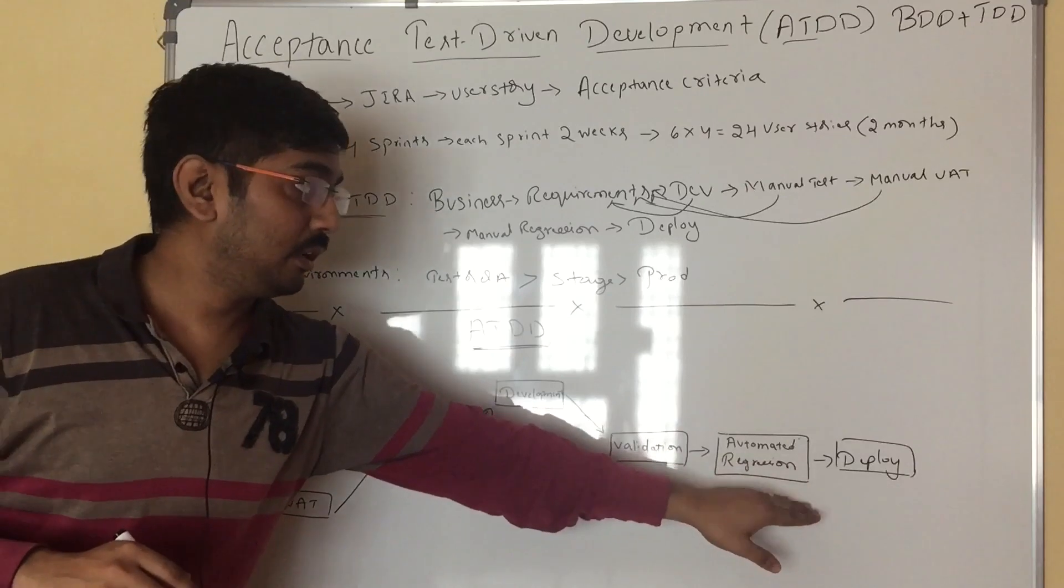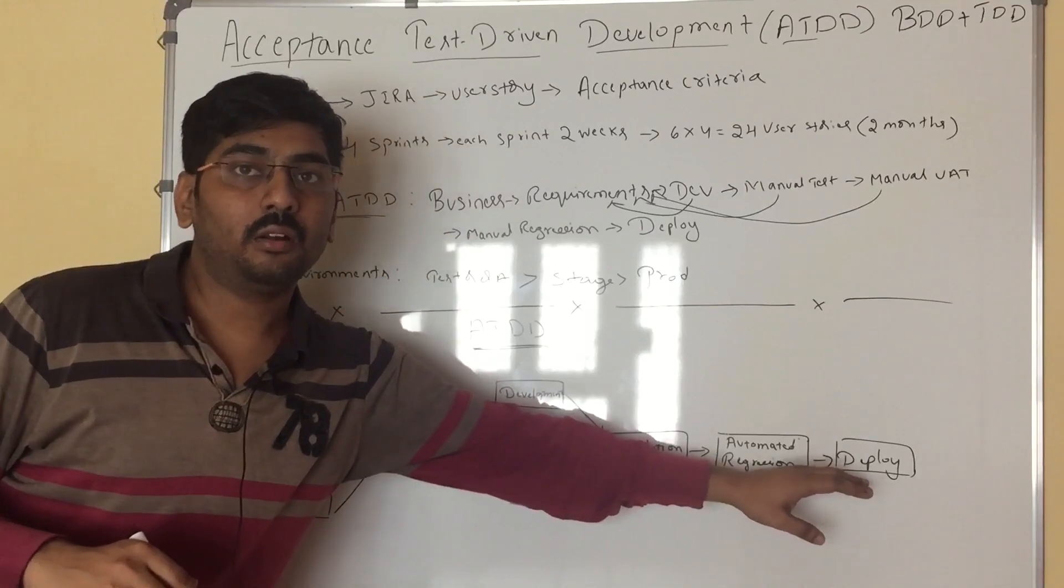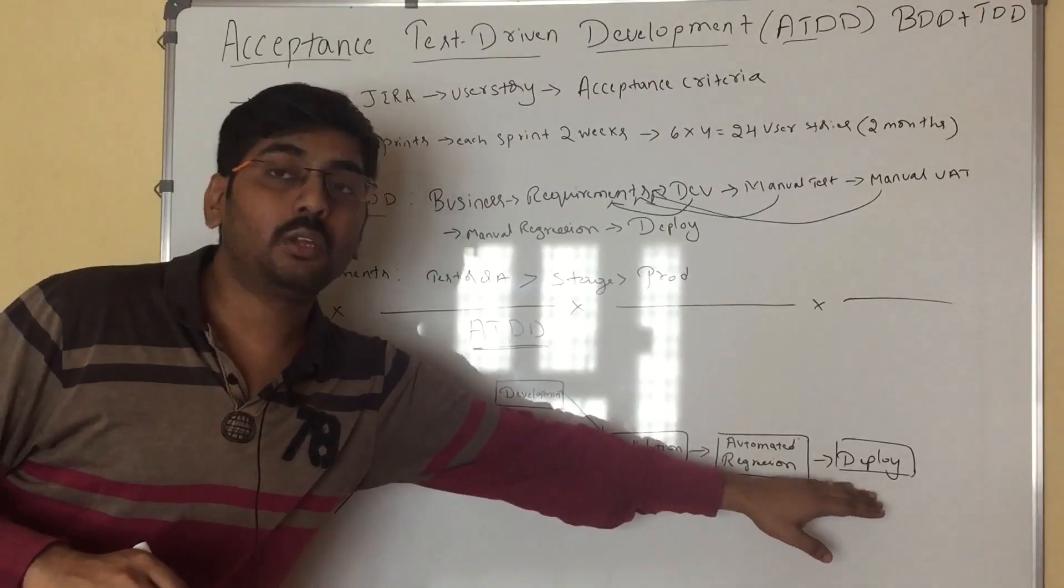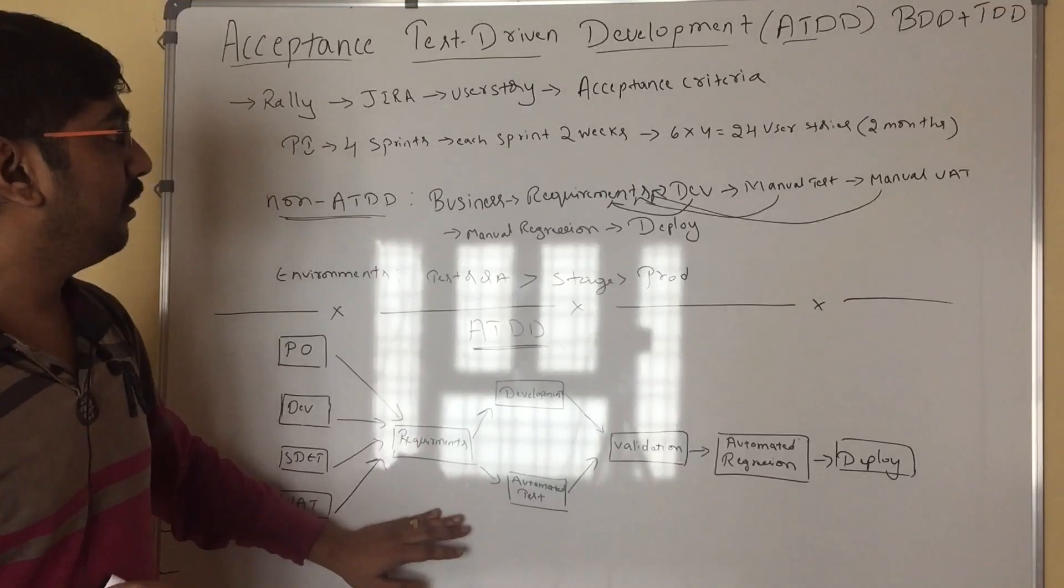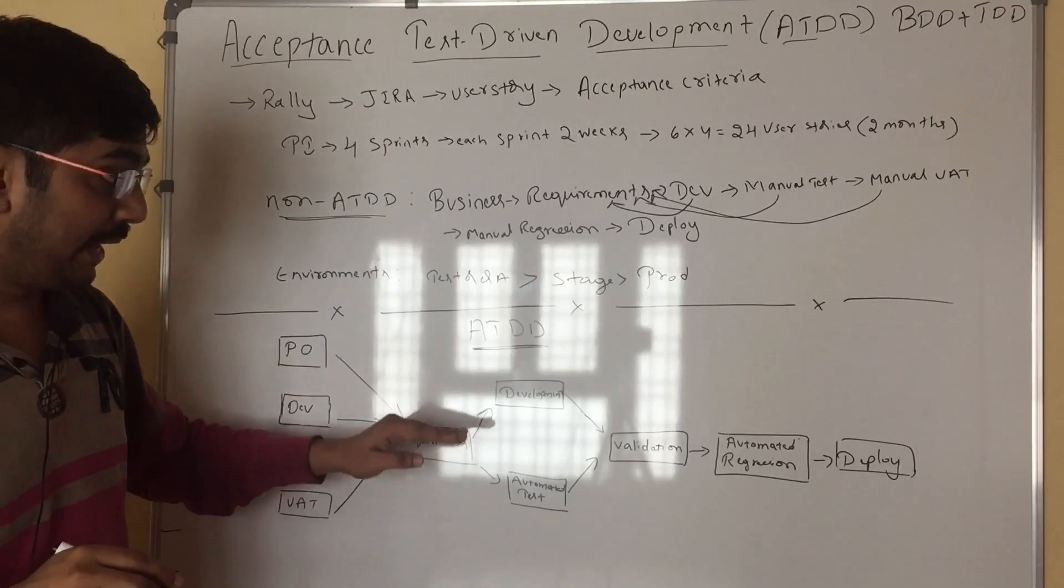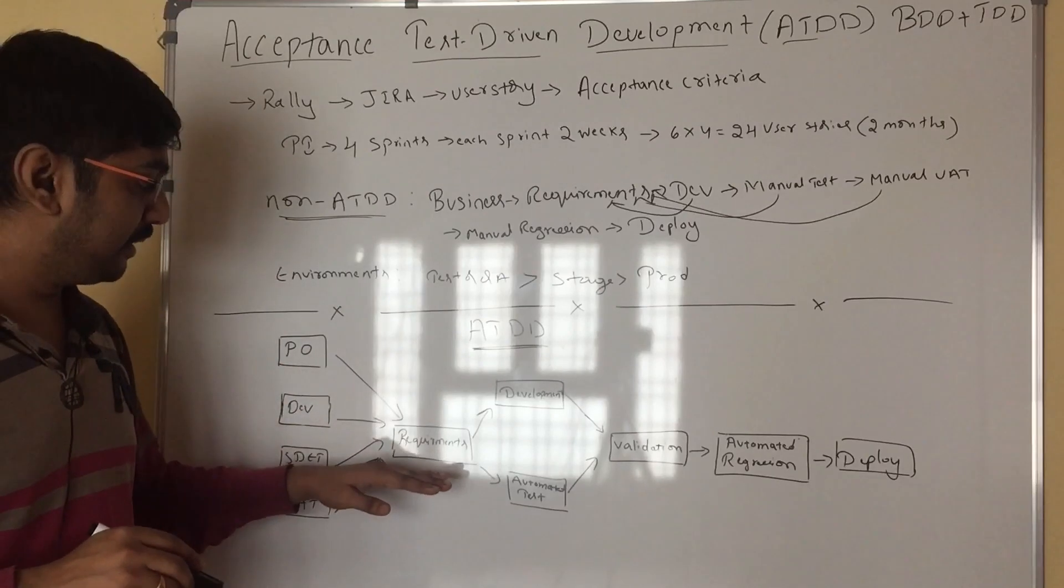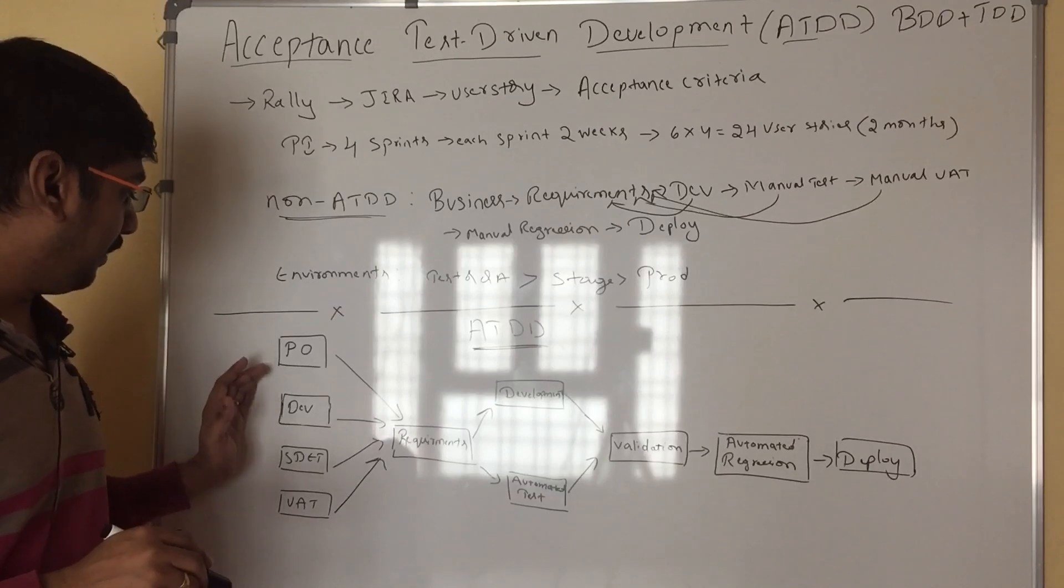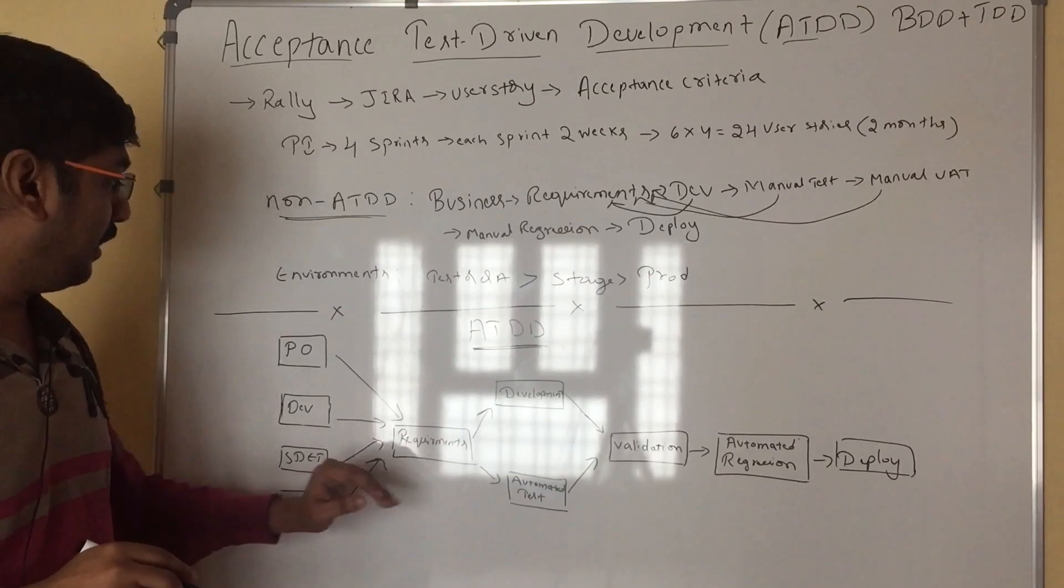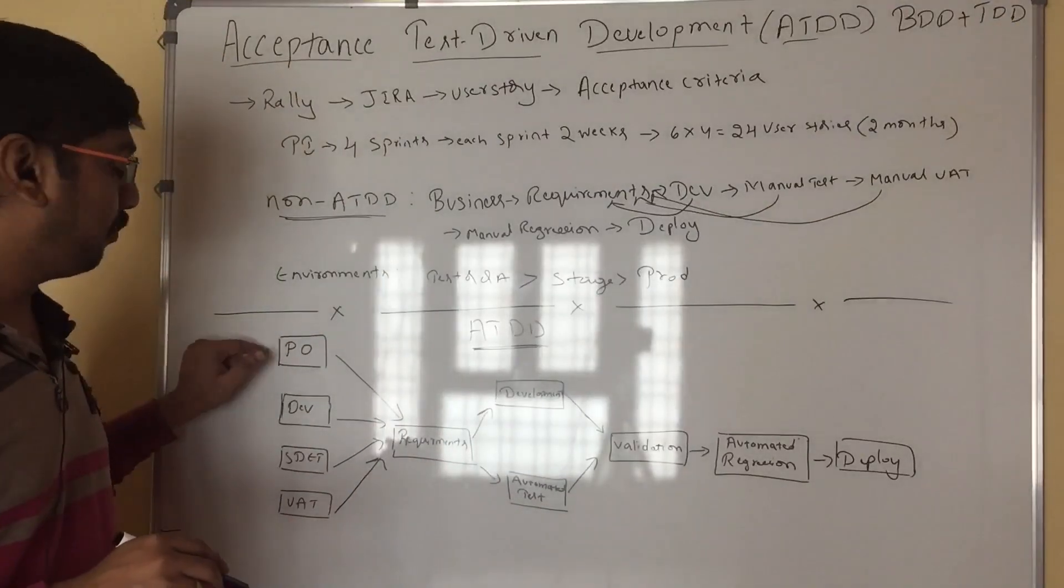Unless you are not using the real-time data in deployment, if you have duplicated data, that you can use in a prod version. In that way, we can minimize a lot of manual efforts. And the most important thing is the misconception of the requirements by different people. All people will be involved in the requirements. But accepting that particular user story will be done by the PO.